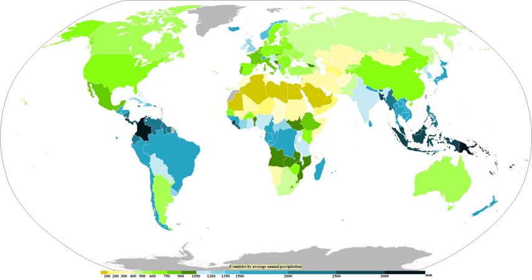Any of the above rain gauges can be made at home. When a precipitation measurement is made, various networks exist across the United States and elsewhere where rainfall measurements can be submitted through the Internet, such as CoCoRaHS or Globe. If a network is not available in the area where one lives, the nearest local weather office will likely be interested in the measurement.